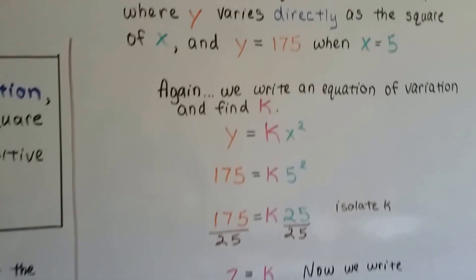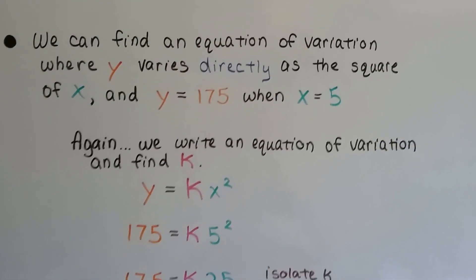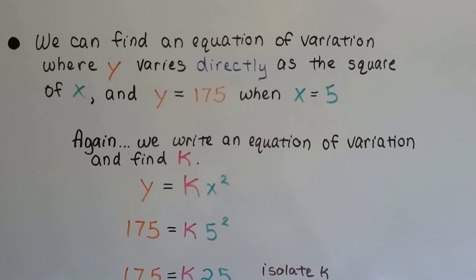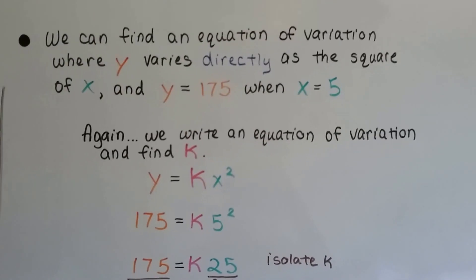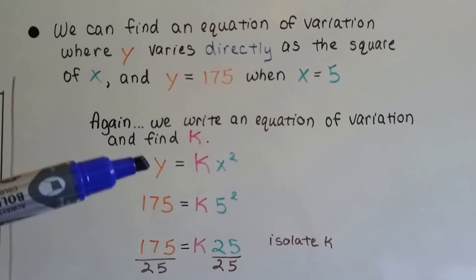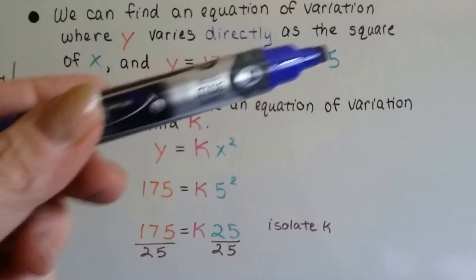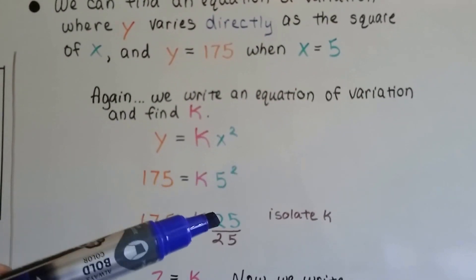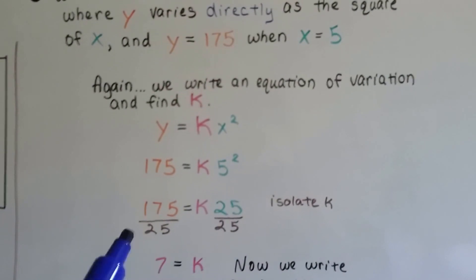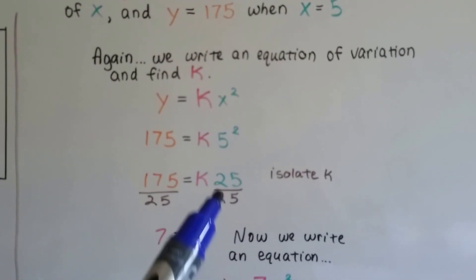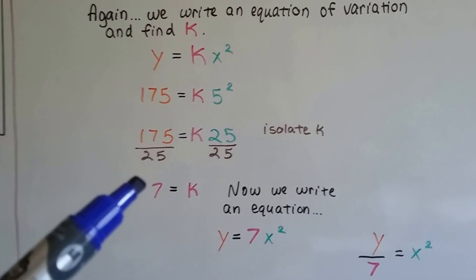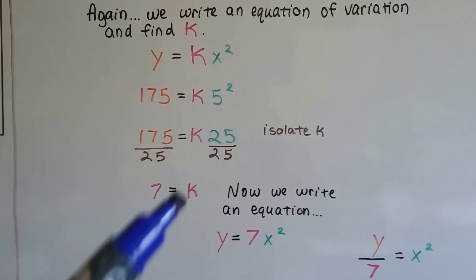Now we can find an equation of variation where y varies directly as the square of x and y equals 175 when x equals 5. So again, we write an equation of variation and find k. So here's our y equals kx squared. We substitute in our values 175 and 5, so now 5 is squared, which is a 25. We isolate the k by dividing both sides by this 25. That creates a 1 here. So we have 1k, and 25 goes into 175 7 times, so 7 equals k.